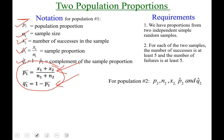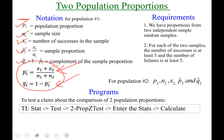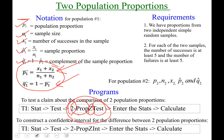If our requirements are met, we can test claims about the comparison of two population proportions using the program called 2 Prop Z Test. Two means two populations, Prop is because the question is about proportions, Z for the standard normal distribution, and Test tells you the program will run a hypothesis test. To construct a confidence interval, you'll run 2 Prop Z Interval — similarly named: two for two populations, Prop for proportions, Z for the standard normal distribution, and INT tells us this program helps set up a confidence interval.